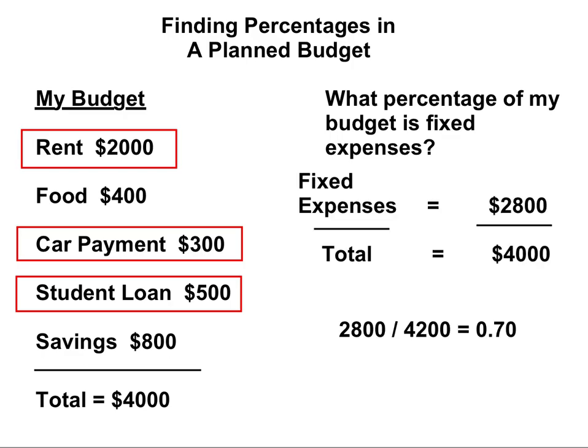To find the percentage, we add up the total cost of all the fixed expenses. This comes to $2,800. We divide that by the total, which is $4,000.